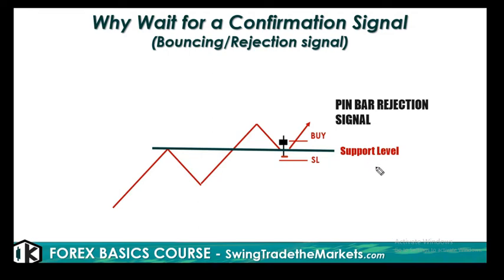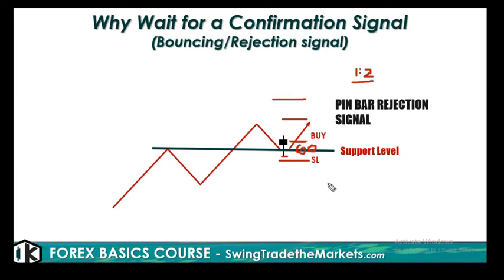For target profit, I usually set a 1:2 risk-reward ratio. If the distance from entry to stop loss is, say, 60 pips, I just double it, so my target profit would be 120 pips. It's that simple. The beauty of waiting for a confirmation signal is not only does it increase the possibility that the market moves up, but you can also logically calculate where to place your stop loss.